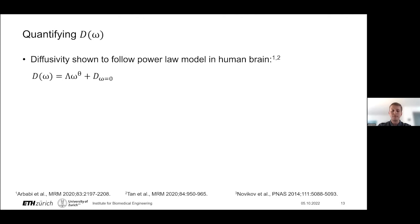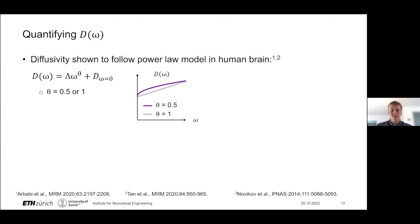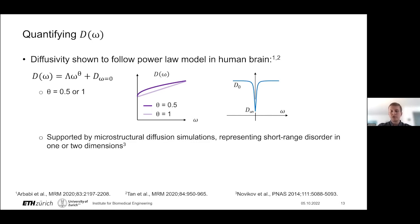It was recently discovered that diffusivity in white and gray matter in the human brain has a frequency response corresponding to a power law model, where the exponent was found to be 0.5 and 1 in different studies, corresponding to a square root dependence and a linear dependence on frequency respectively. Ultimately, in the range of diffusivities and frequencies measured, these two are very similar. In any case, they correspond well to the general characterization of restricted diffusion — increasing diffusivity with increasing frequency — and this model is corroborated by microstructural diffusion simulations, representing short-range disorder in one or two dimensions depending on the exponent.